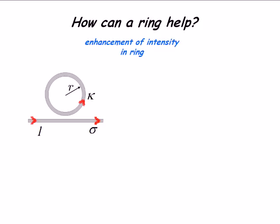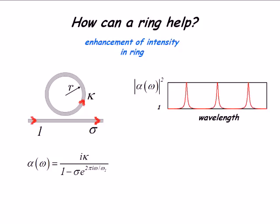a fraction - an amplitude σ goes forward and an amplitude κ goes into the ring. These are field amplitudes. How big σ and κ are is determined by how good the coupling is between the channel and the ring.